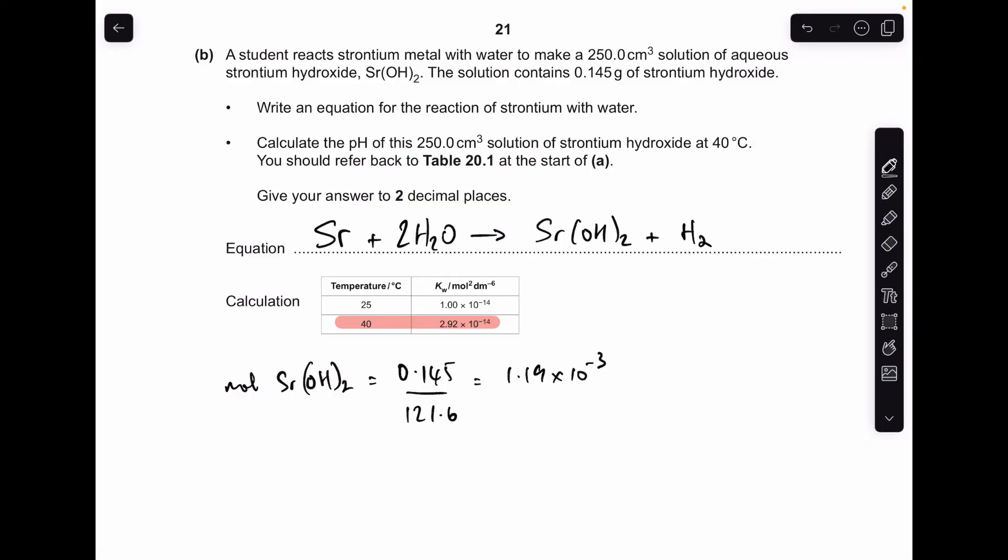Next thing I'm going to do is work out the moles of OH minus ions. It's obviously double the moles of Sr(OH)₂, so that's 2.38 times 10 to the minus 3. Now I need to turn that into a concentration of hydroxide ions, so that's those moles divided by the volume they're in. Just remember that 250 cm cubed needs to be put into dm cubed, so dividing by 0.25, which comes out at 9.54 times 10 to the minus 3 moles per decimeter cubed of OH minus ions.